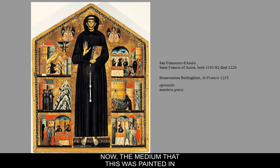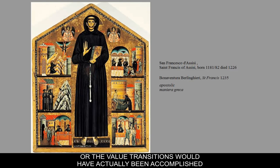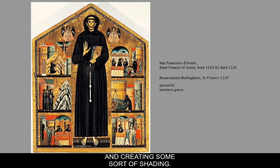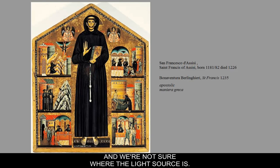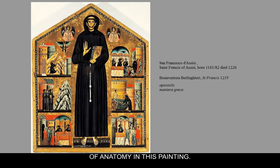The medium is tempera paint on a wooden panel. If you look closely, most of the modeling and value transition is accomplished by a series of cross-hatches and lines that show the form turning and create some shading — though we don't really have real shading and we're not sure where the light source is. Francis is almost floating, with no sense of gravity or real understanding of anatomy.